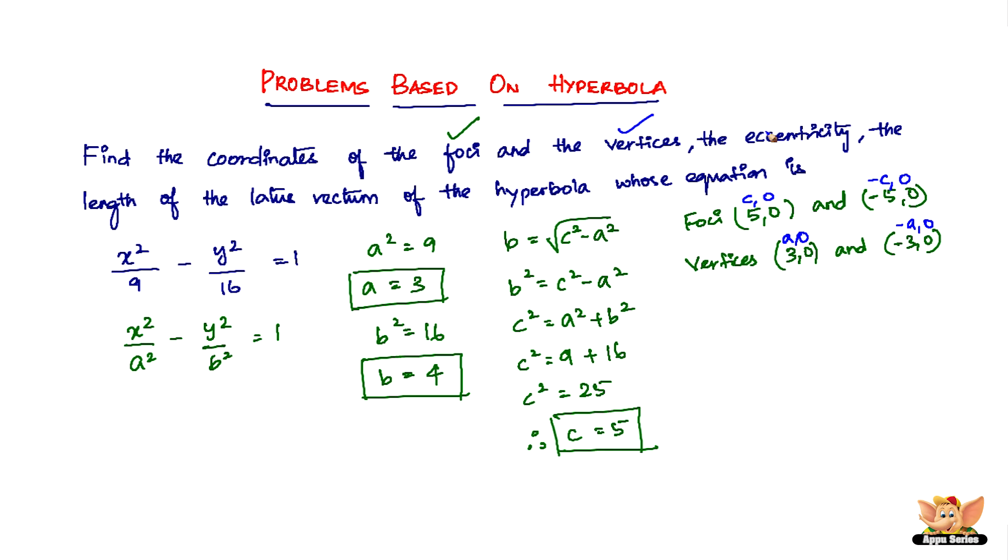So the vertices are done. So next, let's find the eccentricity. Eccentricity, as you know, is given by e equals c by a. So c is given by 5 and a is given by 3. So eccentricity of this hyperbola is 5 by 3.